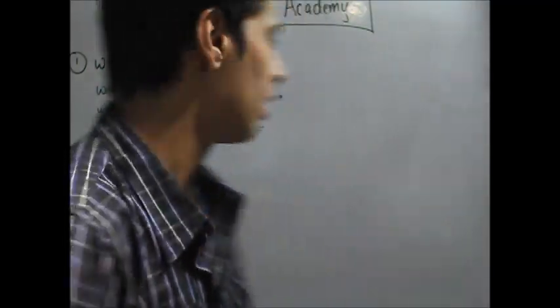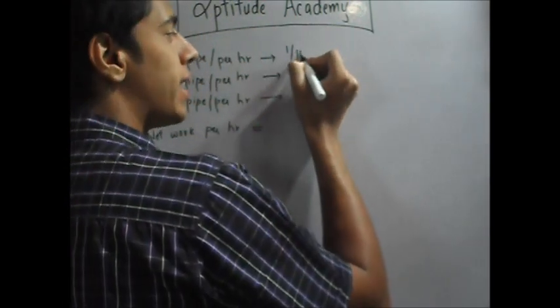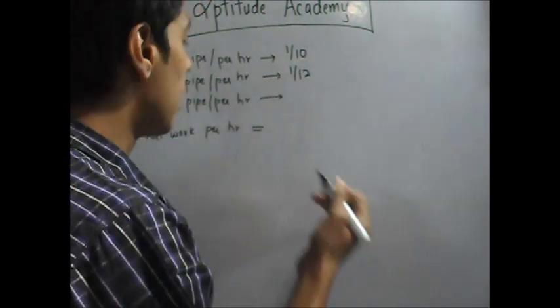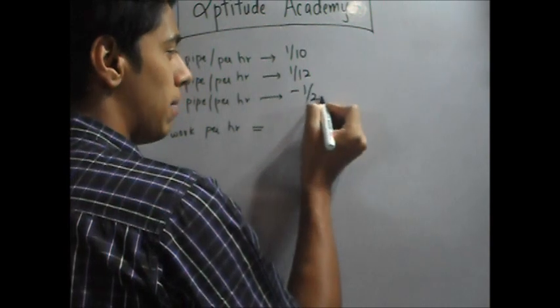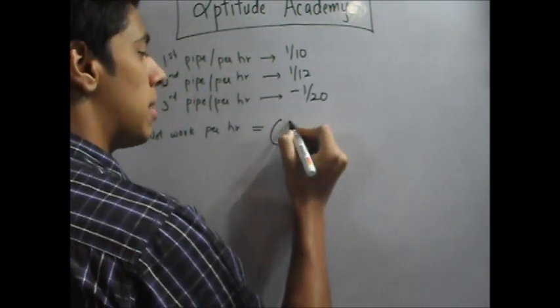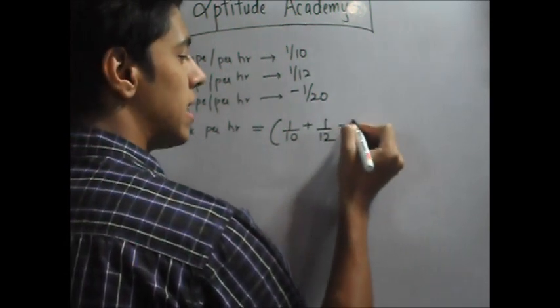Let's fill in the data. Pipe 1, 10 hours it fills the tank, so every hour 1 over 10. Pipe 2, 1 over 12 in the same way. But pipe 3 empties it, so it is minus 1 by 20 because it empties it in 20 hours. Now let's write the network equation. It becomes 1 by 10 plus 1 by 12 minus 1 by 20.